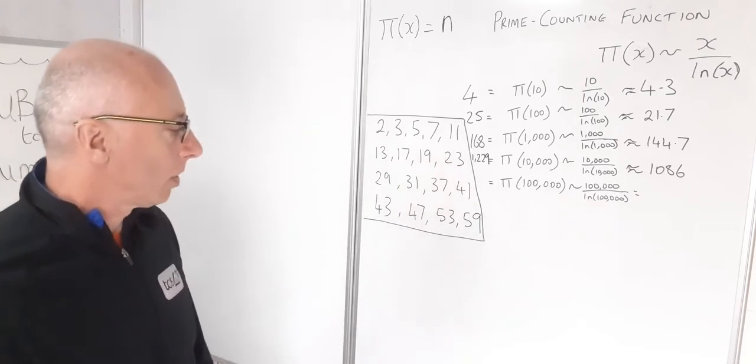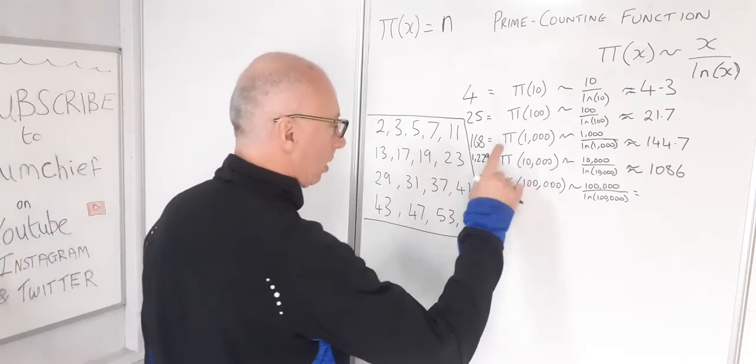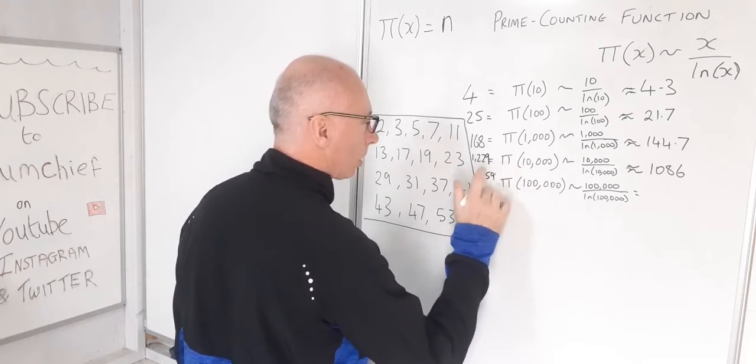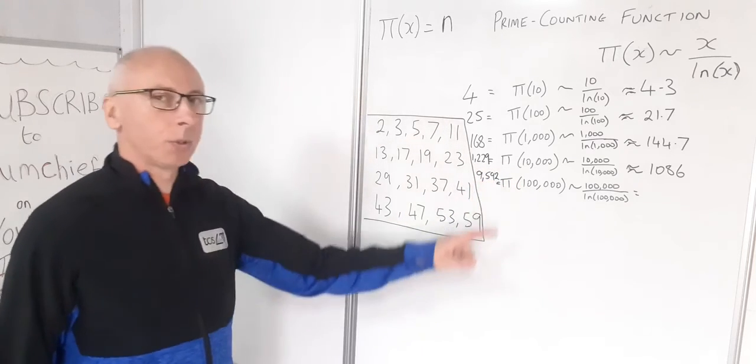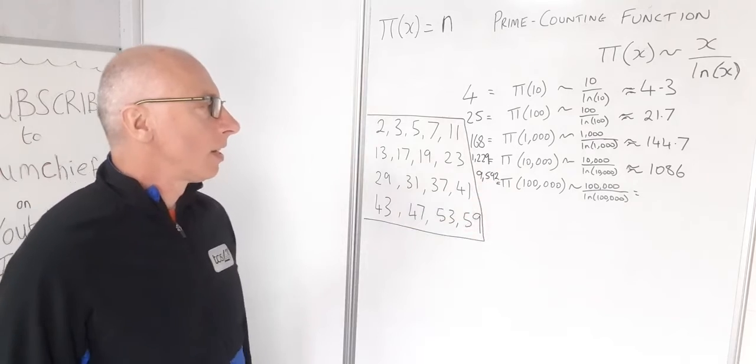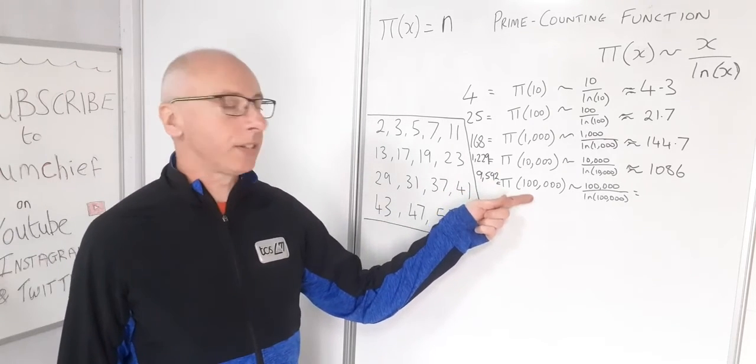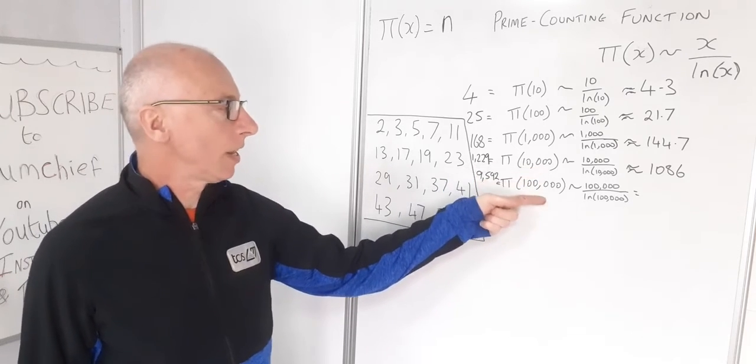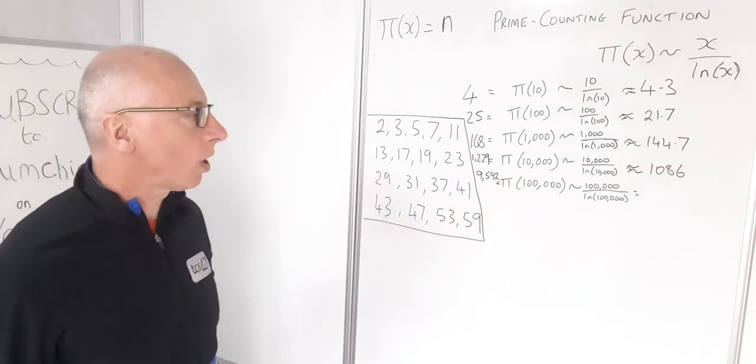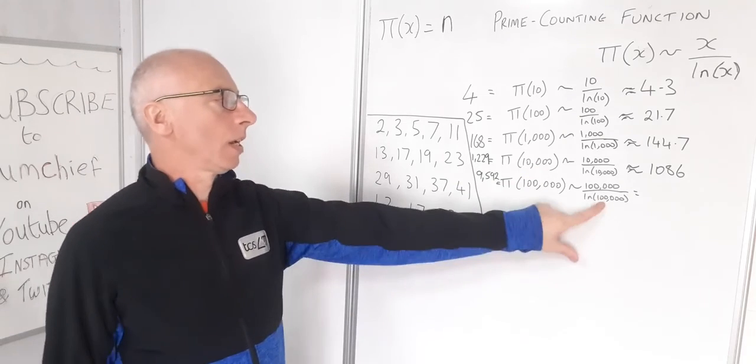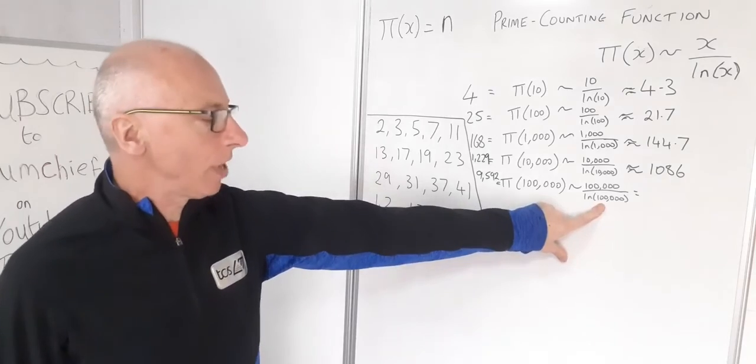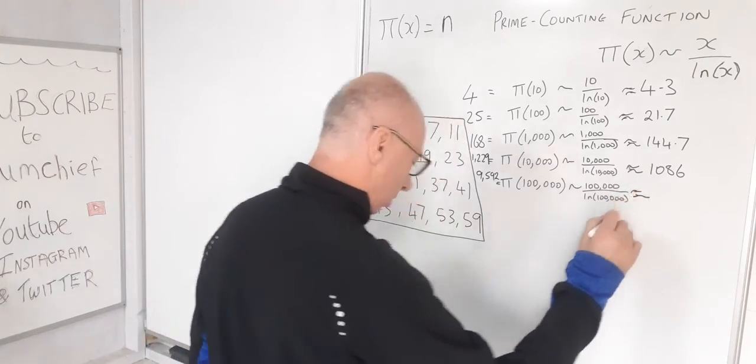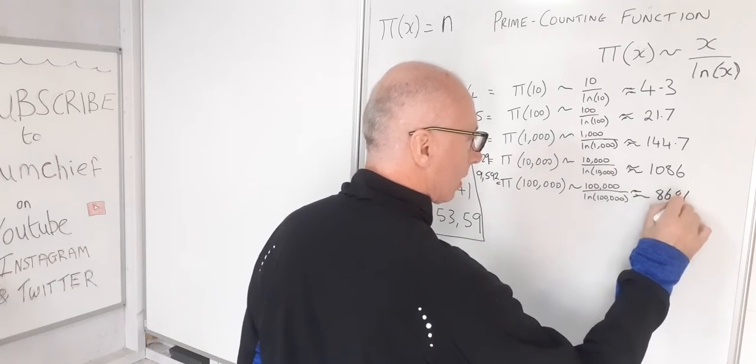Now what about 100,000? Well up to 100,000, there is 9,592 prime numbers. So now they're getting even thinner, so there's just less than every one in 10. But here it's almost one in every eight, so they're thinning out and the gaps are probably increasing by quite a considerable amount. 100,000 divided by the log of 100,000, our approximate value is going to give us approximately 8,686.